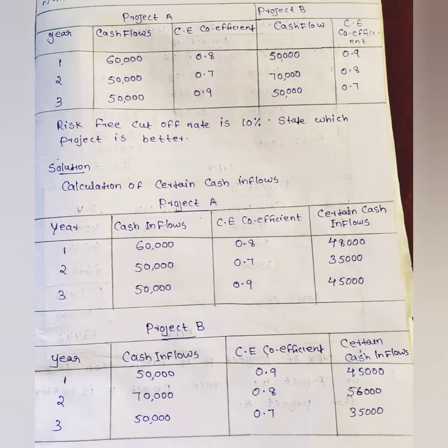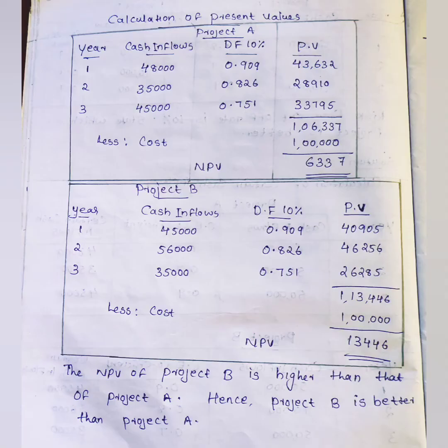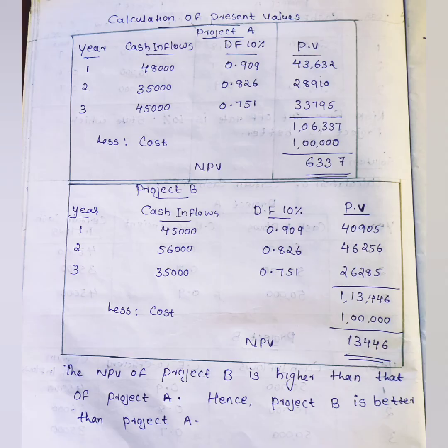The same calculation is done for Project B. Next, we calculate the present values using the discount factor at 10%. The discount factors at 10% are: Year 1 = 0.909, Year 2 = 0.826, Year 3 = 0.751. We multiply the certain cash inflows by these present value factors at the 10% risk-free rate.